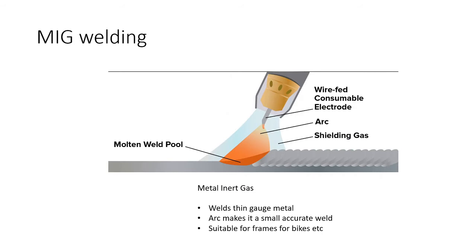Now looking at joining metals — MIG welding is the type we have in college. You have a welding torch with a wire fed from the unit through the torch. The wire creates a spark with the metal producing a weld. It can be very accurate and used for things like bike frames. You cannot do aluminium with MIG as you can't reach a high enough temperature. Of all the welding types, MIG is probably the easiest to learn.